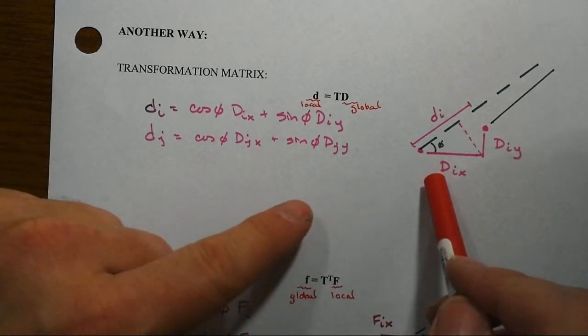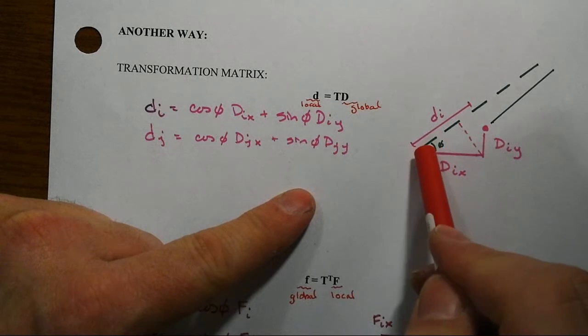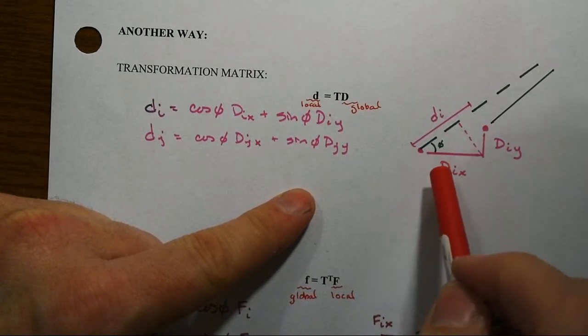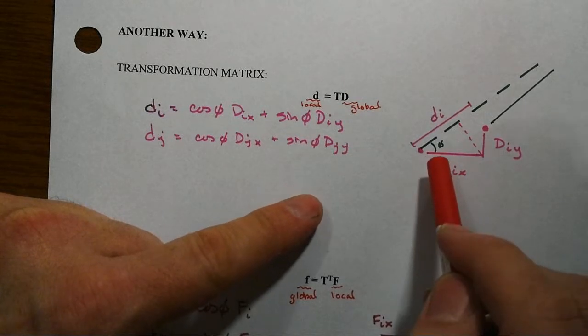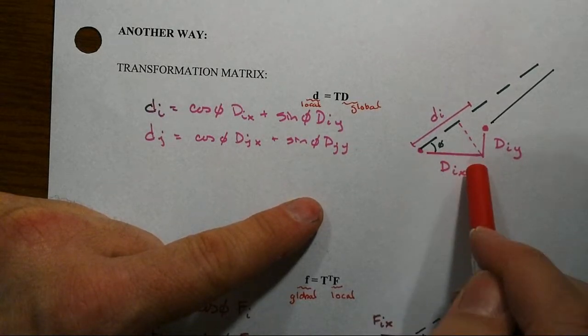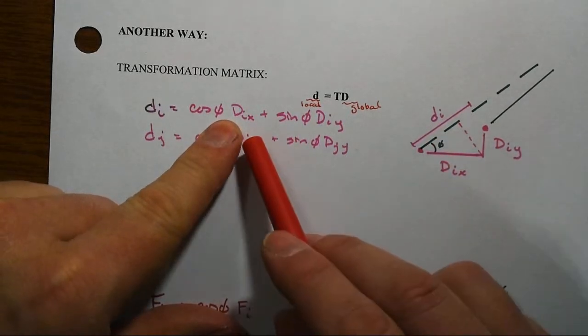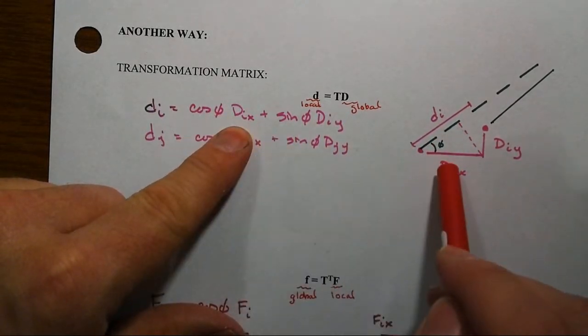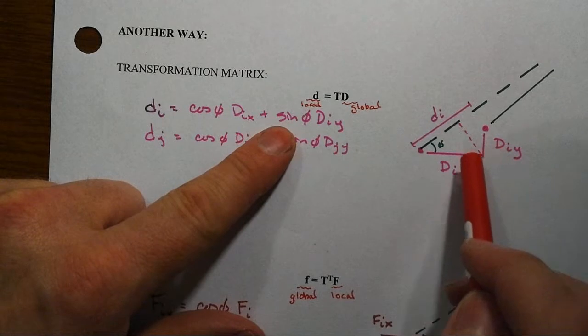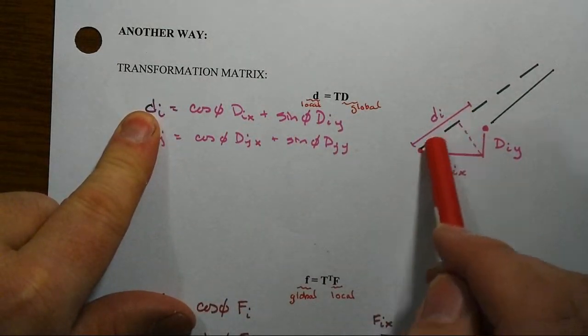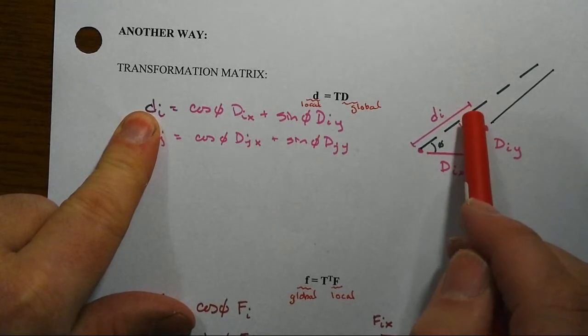So let's go back when we were looking at the displacements that happened at one end of the member at i, then we decomposed it into two separate pieces. Globally what happened with the capital DIx, projecting it back onto the local axis, that was cosine phi of this global, and then we did the same thing for y. If we sum those two we get then the net axial displacement at end i.